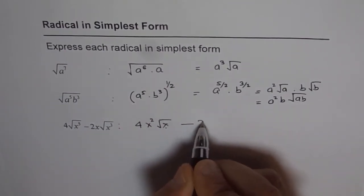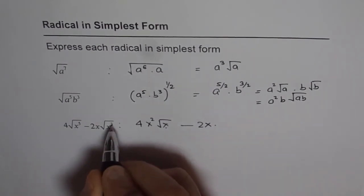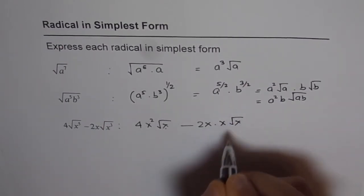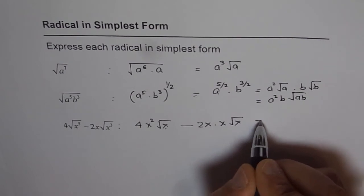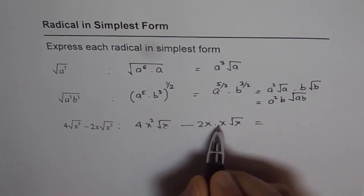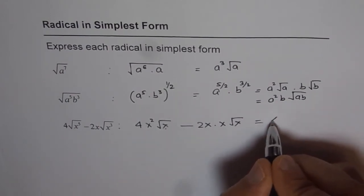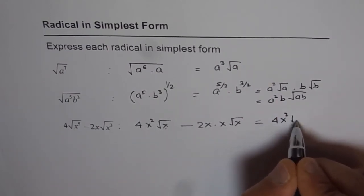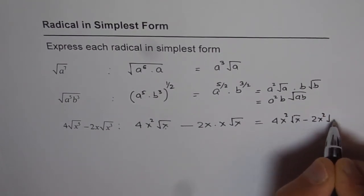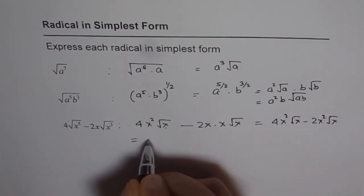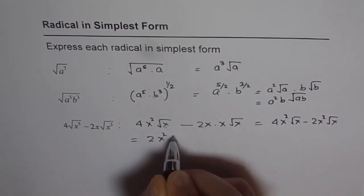Here it is 2 times x times 3 and a half, 3 halves. 3 halves is 1 and a half. That means x square root of x. We can combine these terms. 4x square and this is 2x square square root. Let me write this as 4x square square root of x minus 2x square root of x. 4x square minus 2x square is 2x square. Therefore, I could write this as 2x square square root of x.